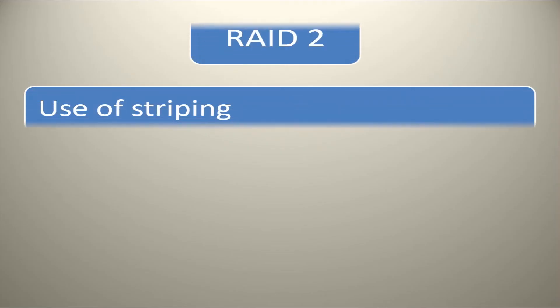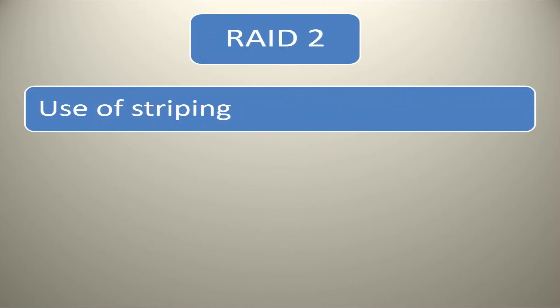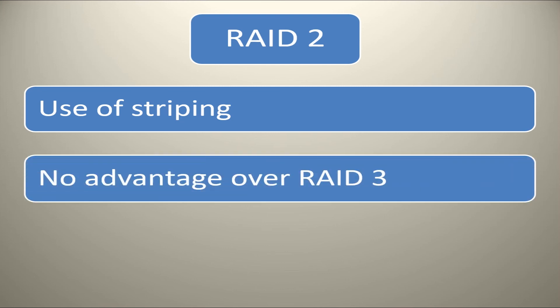RAID 2 uses striping across disks with some disks storing error checking and correcting (ECC) information. RAID 3 has no advantages as such as RAID 2 and is no longer used.